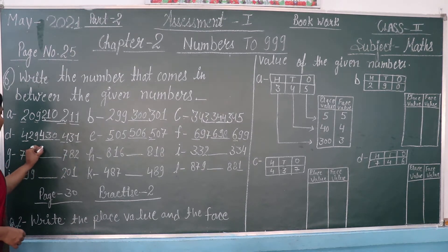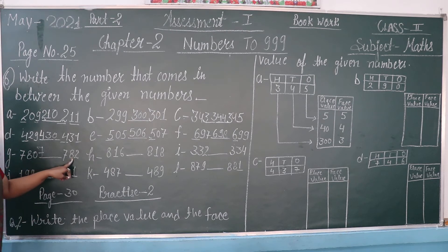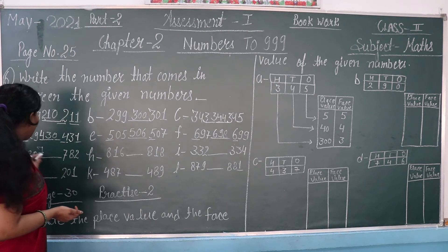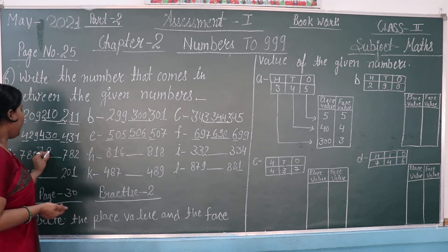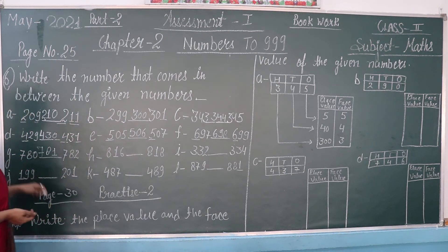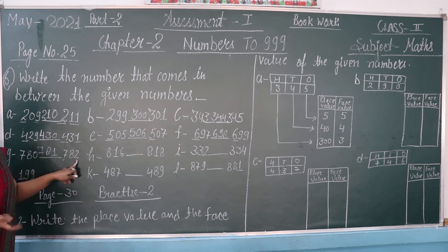Around 700. Between 80 and 82, which number comes? This will be 81. Check: 780, 781, 782 — right.